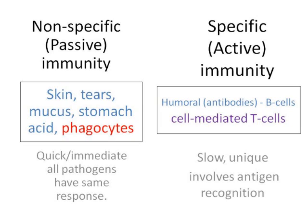Alternatively, there is specific immunity — which at GCSE you would have called active immunity — and that is where you have an antibody response. The antibody response is controlled by B cells, and that's called a humoral response. Humoral is to do with body fluid. Then there is the cell-mediated response, controlled by cells, and that is the T cell response. Both of those are unique and involve antigen recognition, but consequently they are slow.